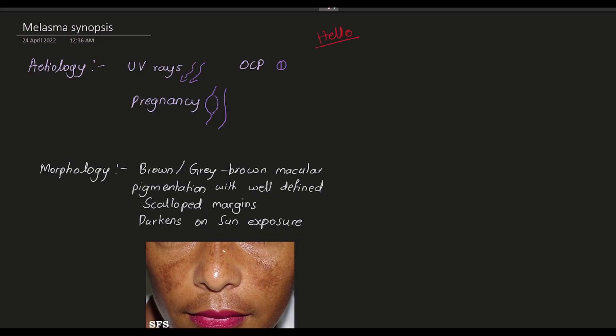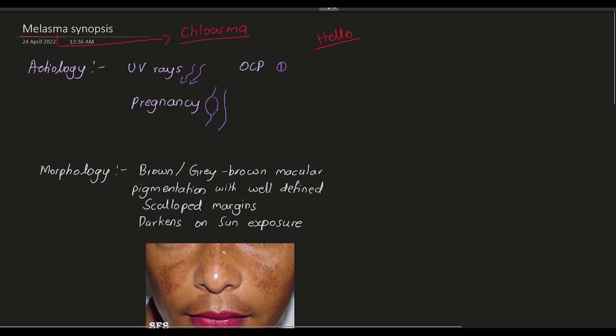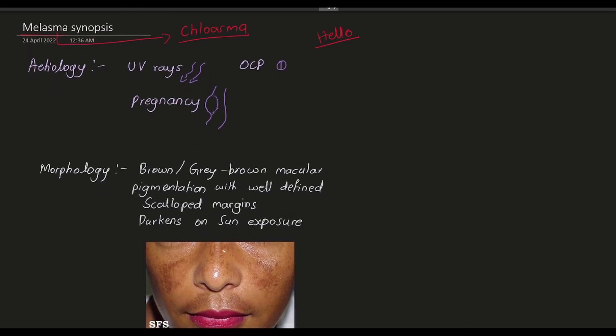Hello everyone. In this video, we are going to see the synopsis of melasma. Melasma is also known as chloasma. What are the etiologies of melasma? It might be caused by UV rays from the sun.